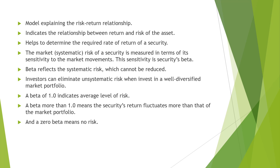That's how we can determine the required rate of return. Beta 1.0 indicates an average level of risk. Beta more than 1 means the security's return fluctuates more than that of the market portfolio. Less than 1 means the security's return fluctuates less than that of the market portfolio. Beta 0 means no risk.